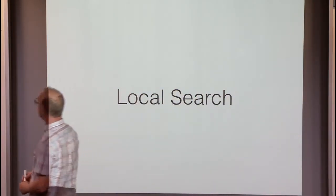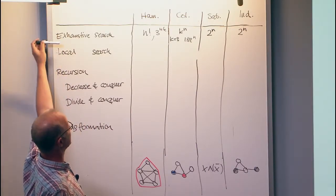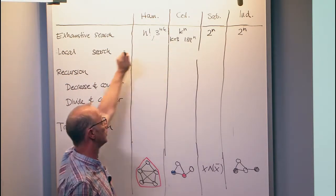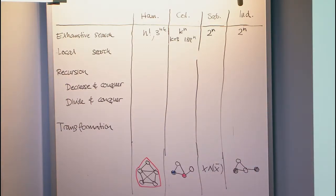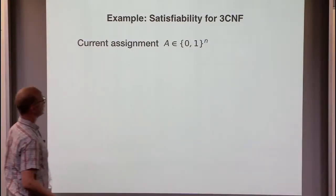Depending on what your opinion of exhaustive search is, there are many non-trivial algorithms hidden up here already. Let me quickly move on to local search, the other paradigm that we know. There is only one important algorithm here, and it's for 3CNF.